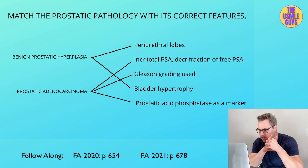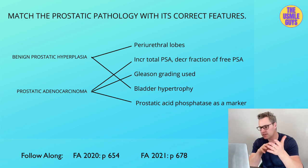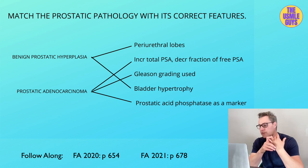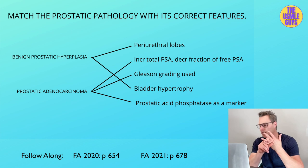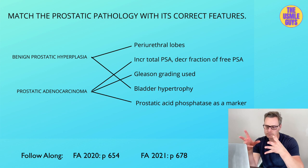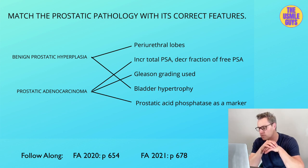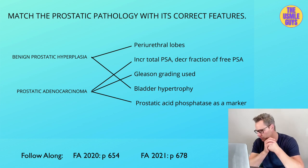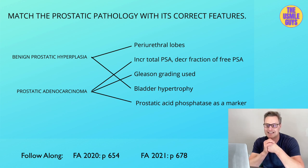Once we've identified BPH, the treatment plan includes relaxing smooth muscle with an alpha-1 antagonist like terazosin, as well as 5-alpha reductase inhibitors — which can also be used for hair loss. We can also use a PDE-5 inhibitor if needed. If surgery is warranted, we can perform a minimally invasive procedure like the transurethral resection of the prostate, also known as TURP.